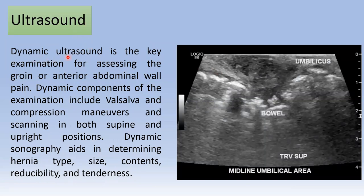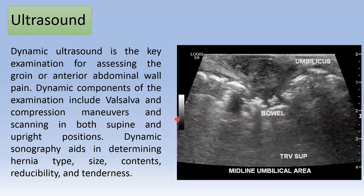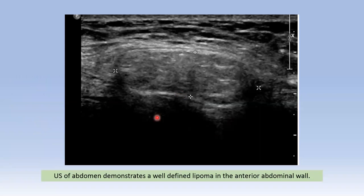Regarding ultrasound: dynamic ultrasound is the key examination for assessing the groin or anterior abdominal wall pain. Dynamic components include Valsalva and compression maneuvers, scanning in both supine and upright positions. Dynamic sonography aids in determining hernia type, size, contents, reducibility, and tenderness. This ultrasound of the abdomen demonstrates a well-defined lipoma in the anterior abdominal wall.